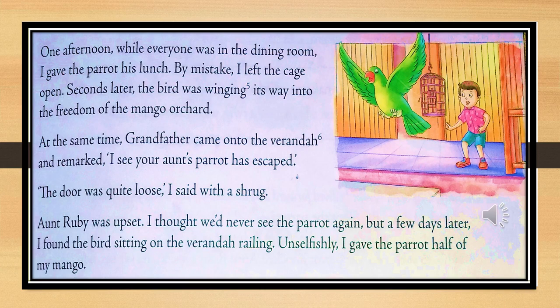At the same time, grandfather came into the veranda and remarked, 'I see your aunt's parrot has escaped.' 'Veranda' means an open space in front of the house with a railing around it. 'The door was quite loose,' I said with a shrug. Aunt Ruby was upset. I thought we would never see the parrot again. But a few days later, I found the bird sitting on the veranda railing.